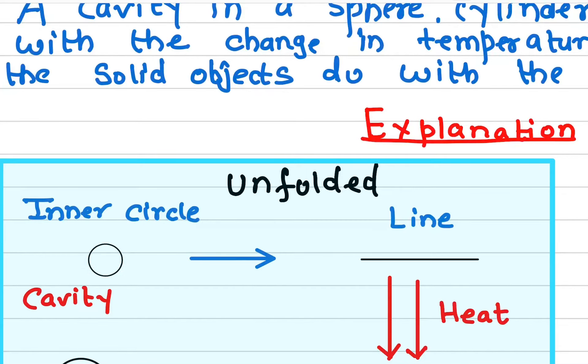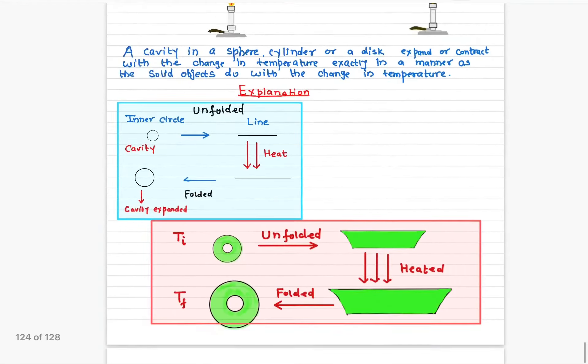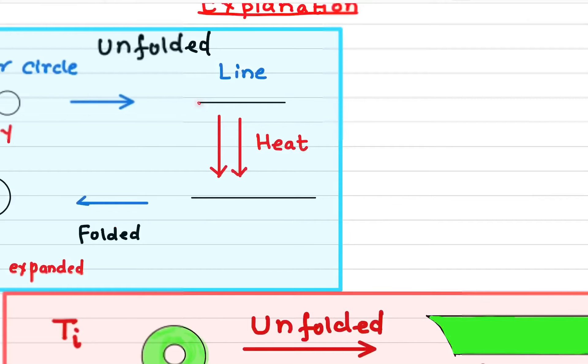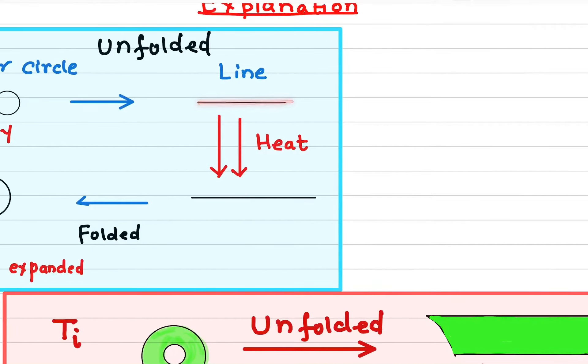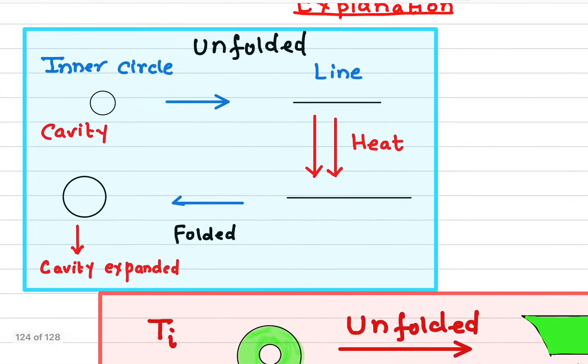If you unfold this circle or this ring, it'll just look like a line. What happens now if you heat it? It will expand with the temperature. Now fold them back and then you'll see a larger circle here. So that means the cavity is expanding in exactly a manner as a solid expands.